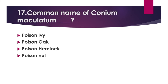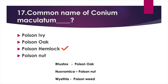Common name of Conium maculatum — Option A: Poison ivy, Option B: Poison oak, Option C: Poison hemlock, Option D: Poison nut. Answer: Option C, Poison hemlock. Common name of Rhus tox: Poison oak. Nux moschata: Poison nut. Vaithya: Poison veer.